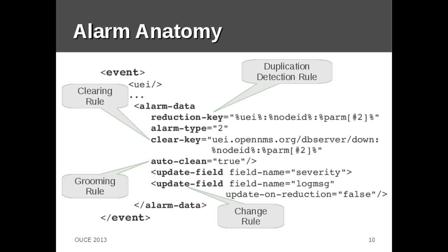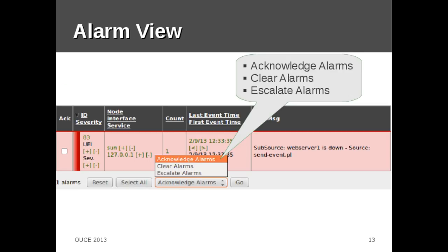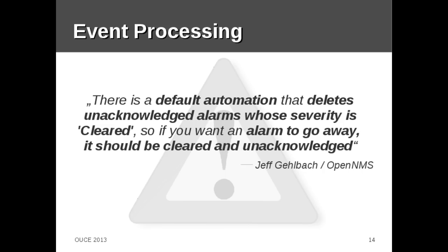Very interesting is that we have four kinds of rules in the alarm data tag. We have a reduction key, which is similar to a duplicate detection rule; a clear key, which is a clearing rule; a grooming rule with the auto-clean tag; and change rules with the update field tag. We can also acknowledge alarms, clear alarms, and escalate alarms in the alarm view. It's very important that you don't acknowledge cleared alarms — if you want an alarm to go away, it should be cleared and unacknowledged.